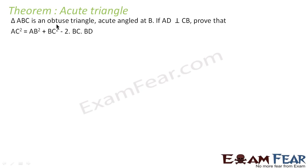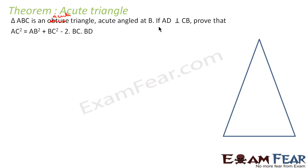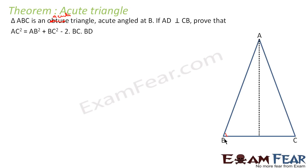Let's go to the acute angle theorem. This is an acute triangle at B. We have to prove that AC² = AB² + BC² − 2·BC·BD, where AD is perpendicular to BC.